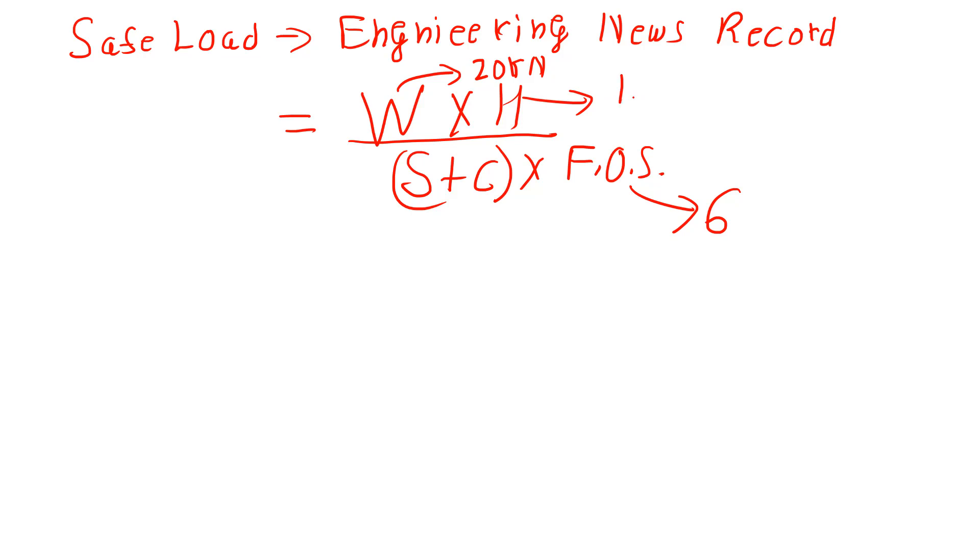S is given as 40 mm for the last five blows, but in this expression S is the average for the last five blows, so 40 divided by 5 equals 8. C is given as 2.5.